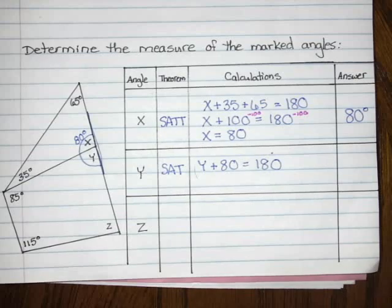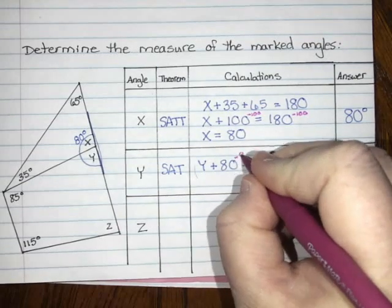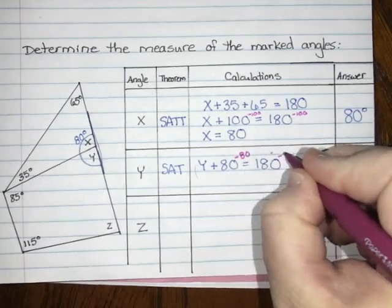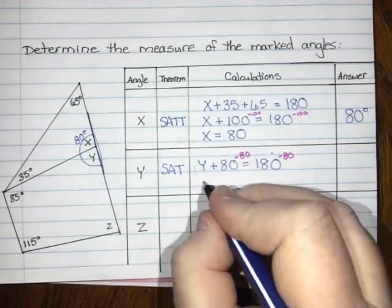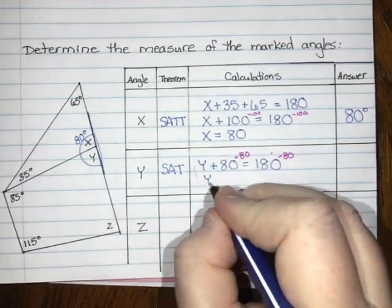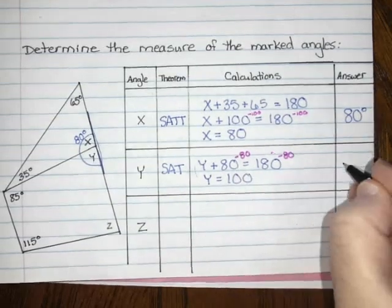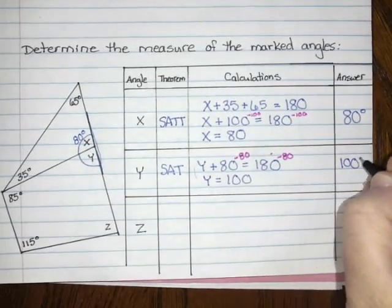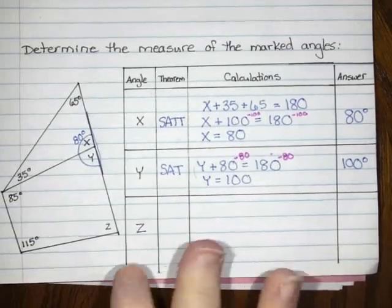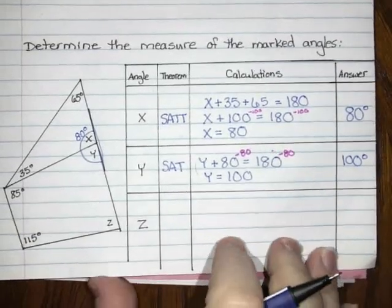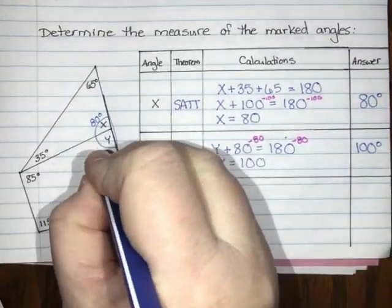I don't have any like terms to collect, so I'm just going to subtract 80 from both sides, and I get that y equals 100 degrees. I'll fill in 100 degrees in the answer column and label it on the picture as well.